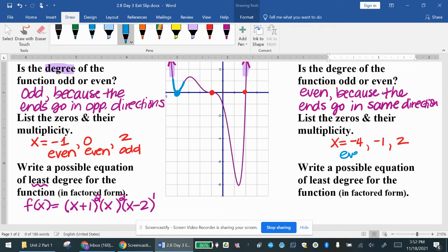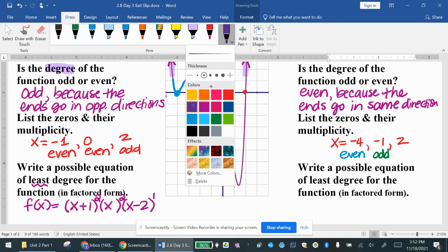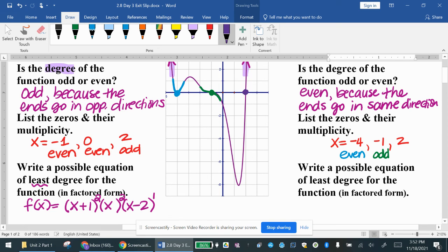that one's going to be even because it just touches it. The next one is going to be odd because it passes through the x-axis at that value. So that's odd. And then last but not least, this one is also odd because it passes through.